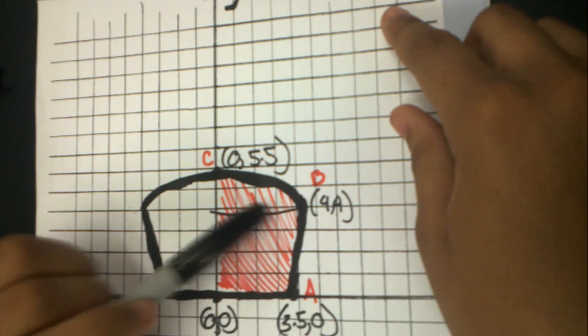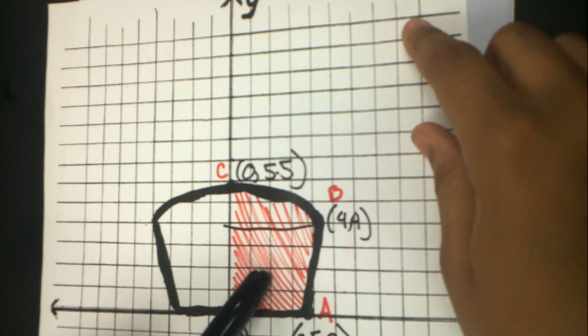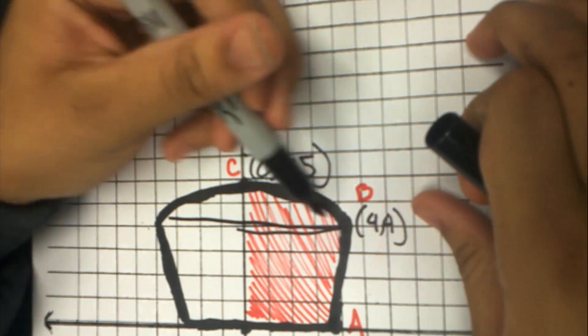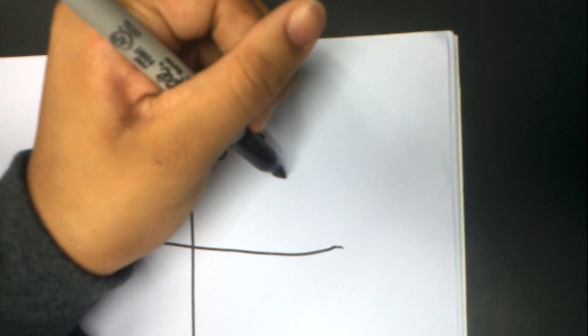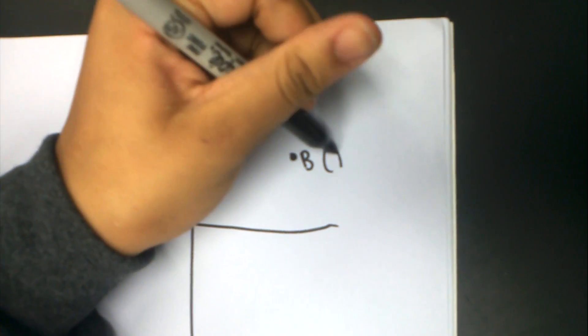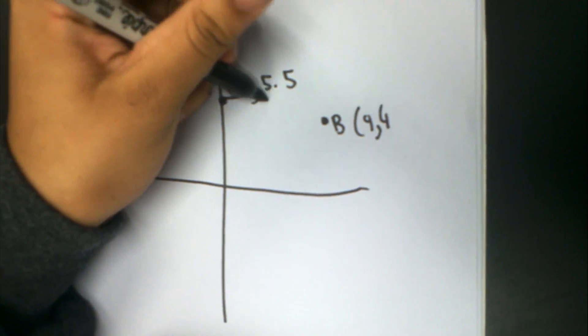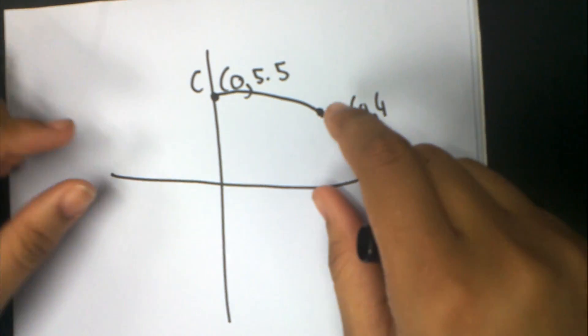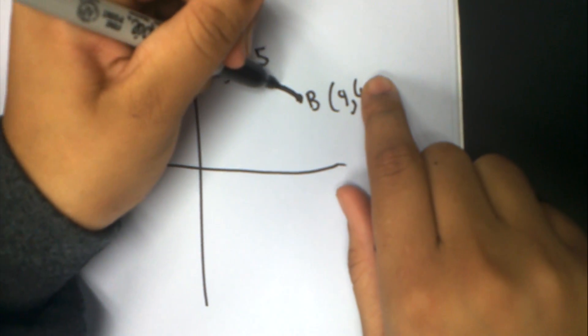Now that Clarabelle has found the volume of this shape, I'm going to find the volume of this shape right here. You have point C, which is (0, 5.5), and point B, which is (4, 4). That's our parabola from before, but now we're going to spin it around the y-axis and it's going to make a spherical cap.